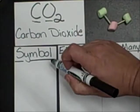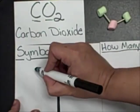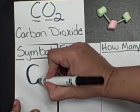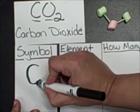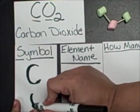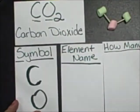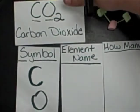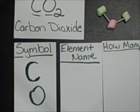So each capital letter is a new symbol. So in my symbol column, I'm going to write down a C and O, because those are the two symbols that I have.